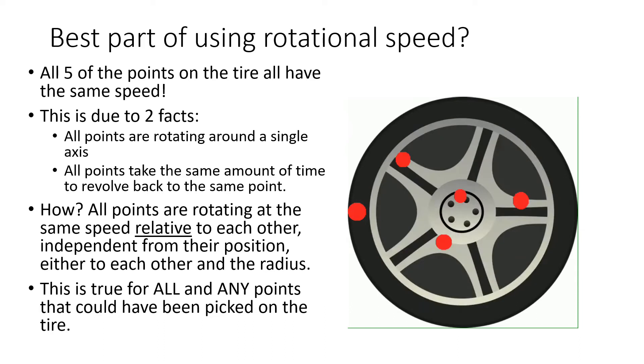Best part of using rotational speed. All 5 of the points on the tire all have the same speed. This is due to 2 facts: all points are rotating around a single axis, all points take the same amount of time to revolve back to the same point.